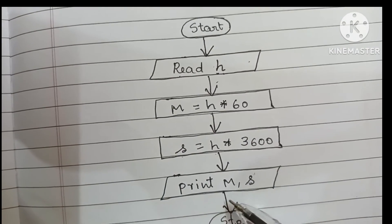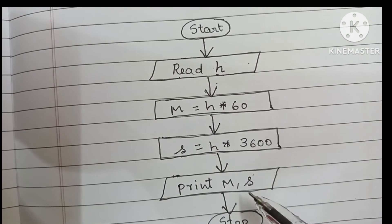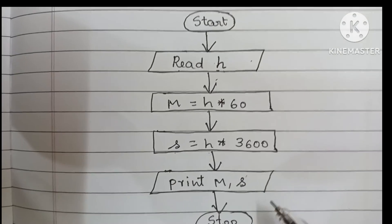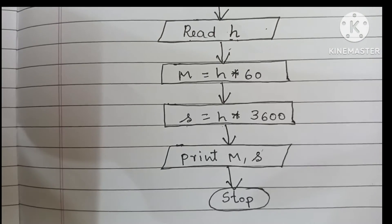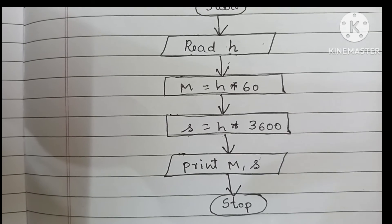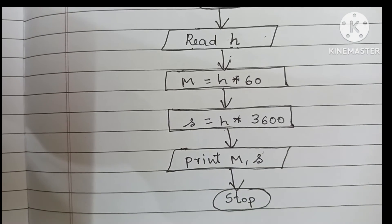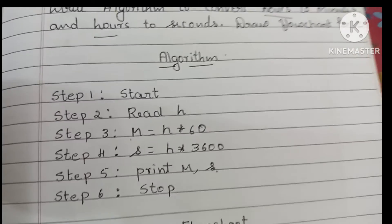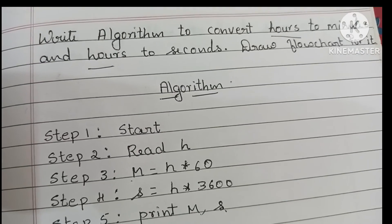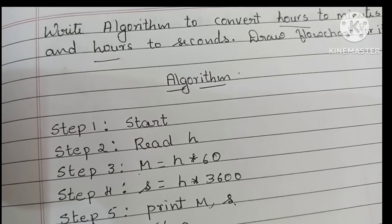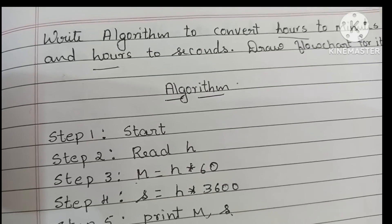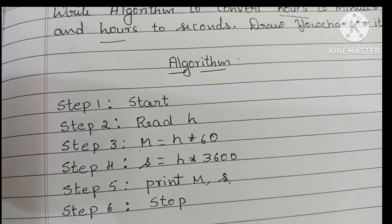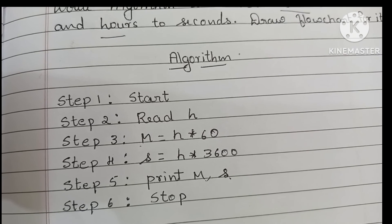Next we print m and s, that is minutes and seconds, written within a parallelogram shape. Next we stop the flowchart using the stop statement. This is the algorithm and flowchart to convert hours to minutes and hours to seconds formats. Thank you for watching — all the best, please like and subscribe to my channel.